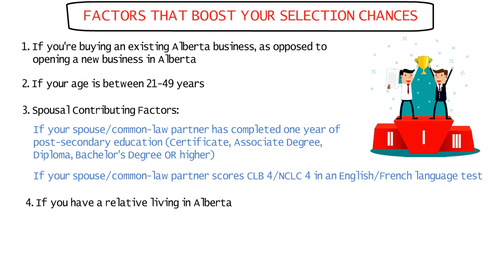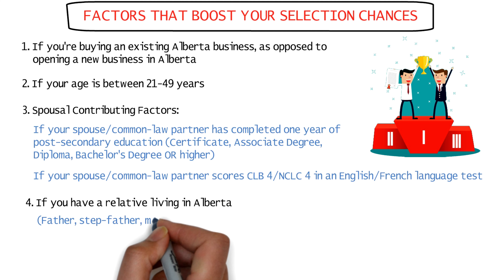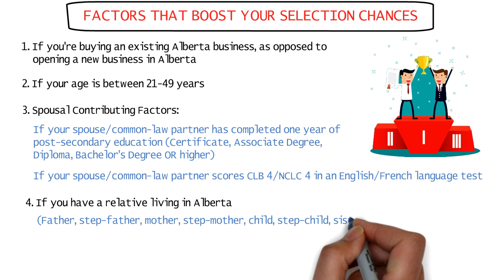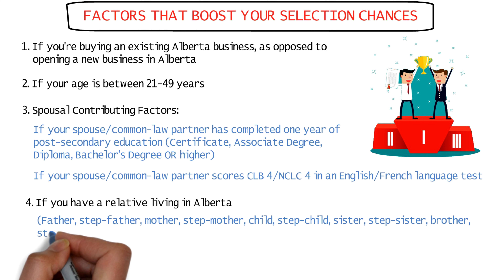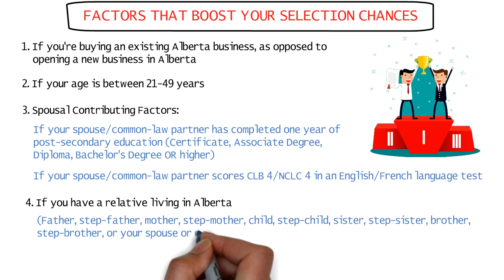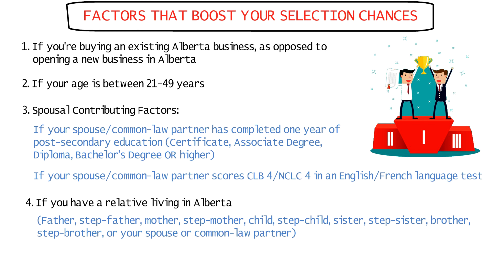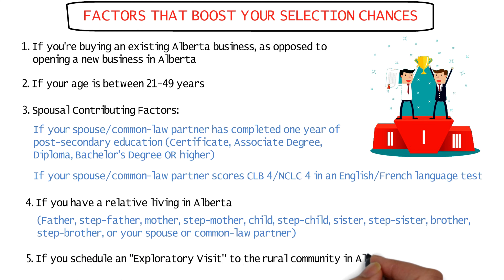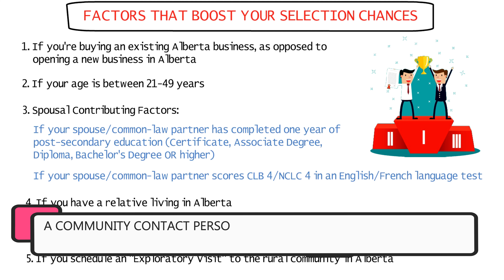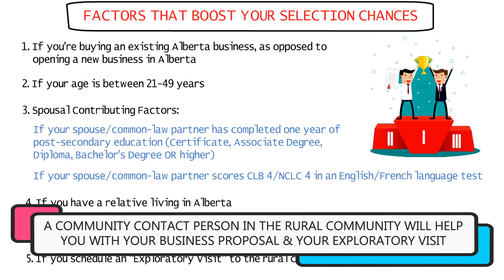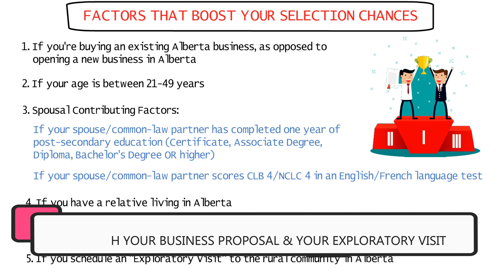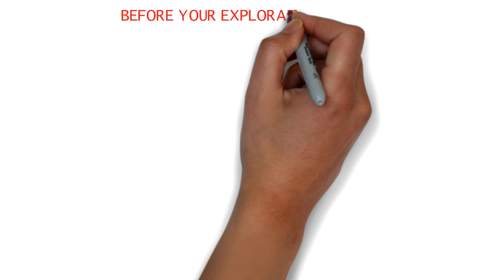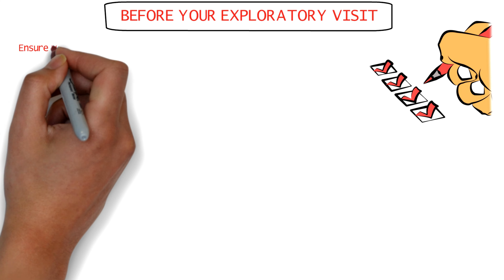If you have a relative currently living in Alberta, that would also help your application. These relatives include your father, stepfather, mother, stepmother, child, stepchild, sister, stepsister, brother, stepbrother, or your spouse or common-law partner. You should also consider an exploratory visit to the rural community you're interested in. Candidates can connect with the community contact person to discuss their business proposal and schedule an exploratory visit prior to coming to Alberta.